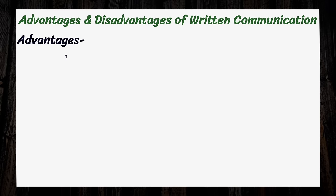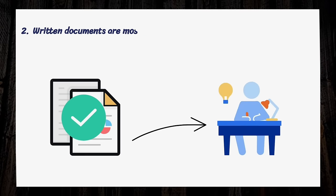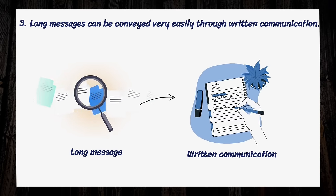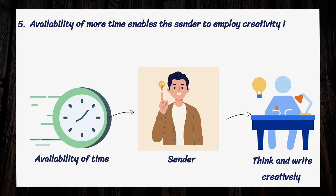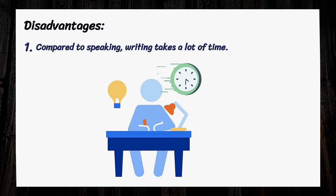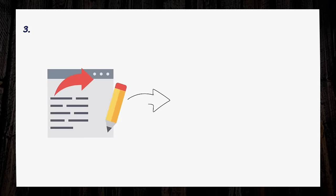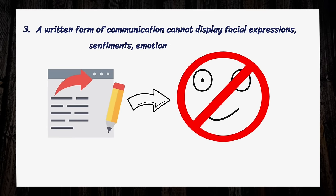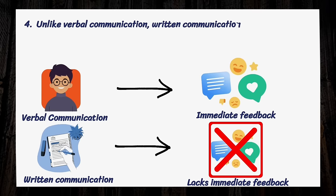Now let's discuss some advantages and disadvantages of written communication. Advantages: written documents can be recorded and stored permanently as proof and evidence for future reference. Written documents are most likely to be accurate as there is wide scope for repeated checking. Long messages can be conveyed very easily. The written form of information is accepted widely. The availability of more time enables the sender to employ creativity in their writing. Disadvantages: compared to speaking, writing takes a lot of time. Illiterate people can neither read nor write, so written communication is fruitless for them. A written form cannot display facial expressions, sentiments, emotions, and tone of voice, which may cause miscommunication. Unlike verbal communication, written communication lacks immediate feedback.